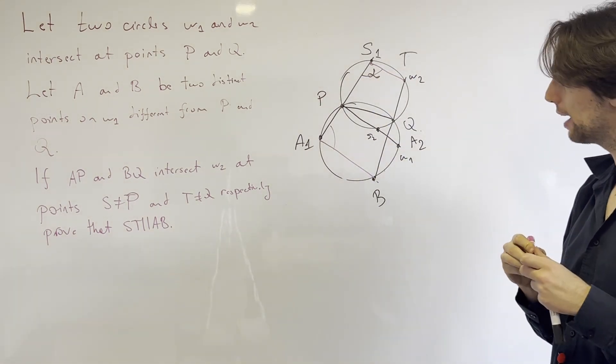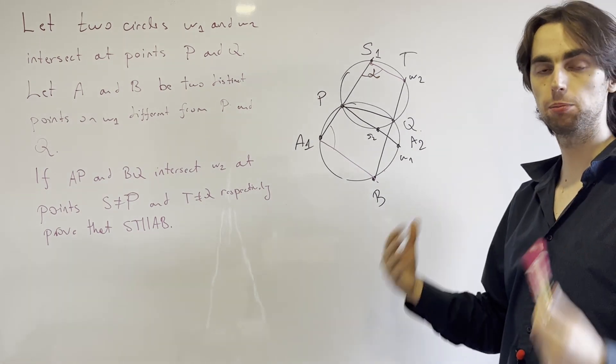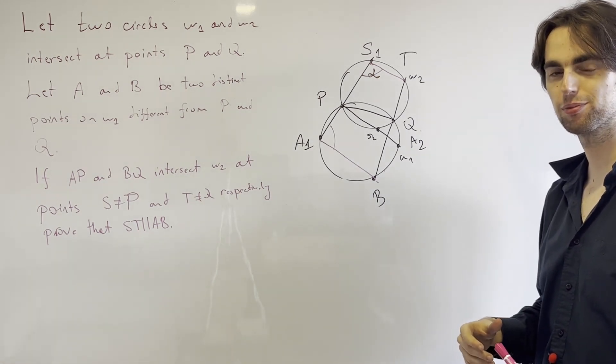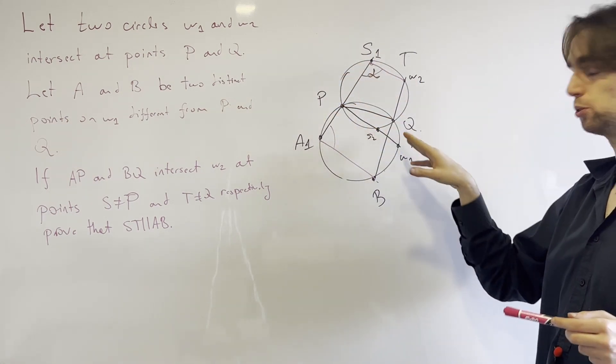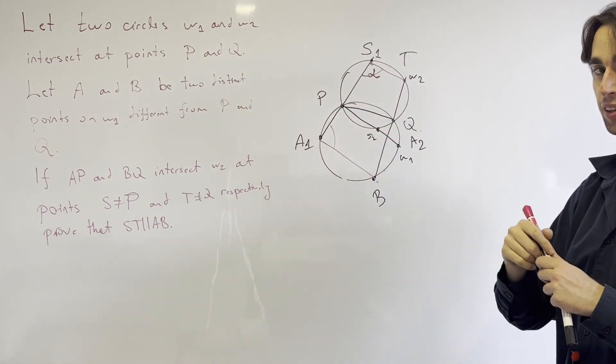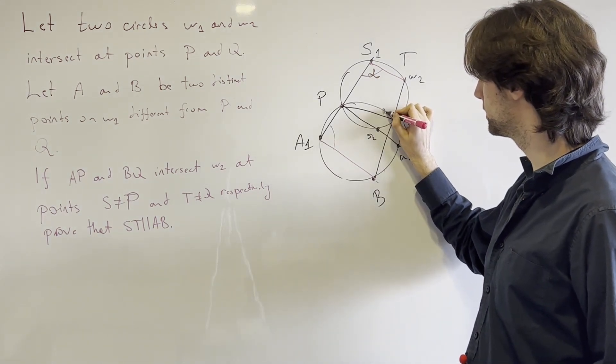Then what do I have from my cyclic points? Pause for two minutes, just ask what do you have from the cyclic points? Forget about S2 and A2 for now.